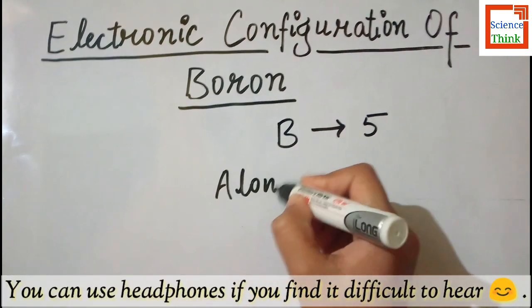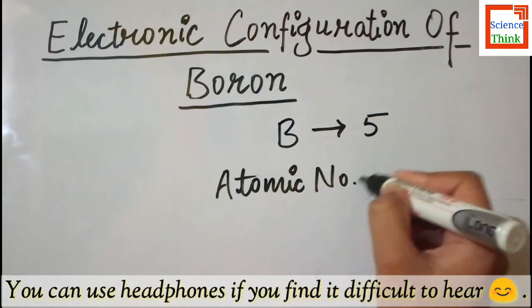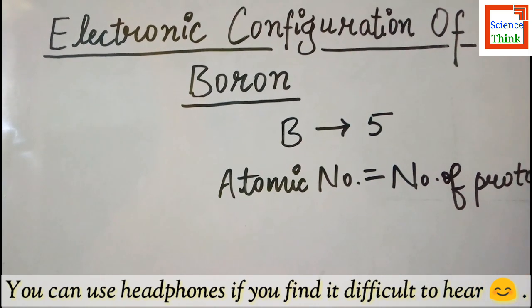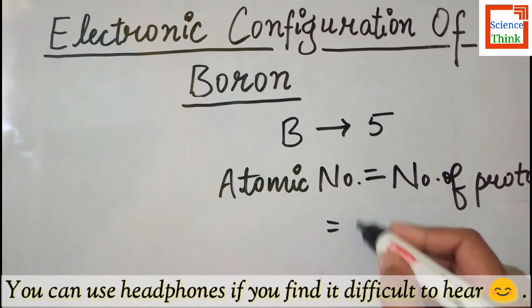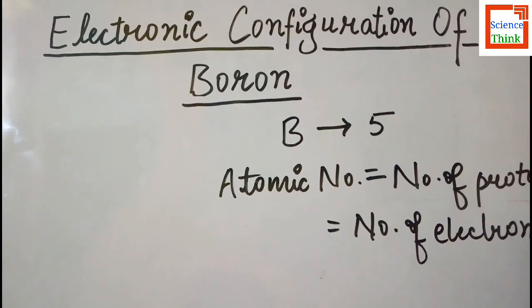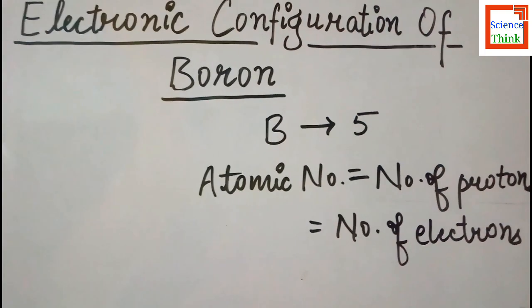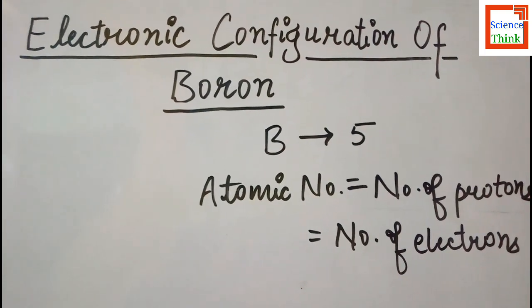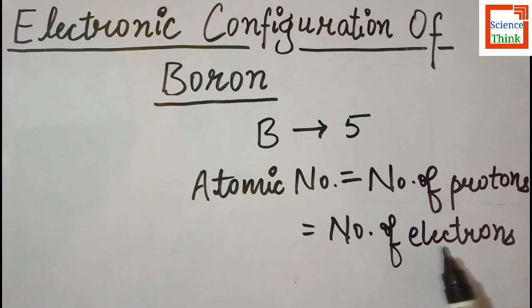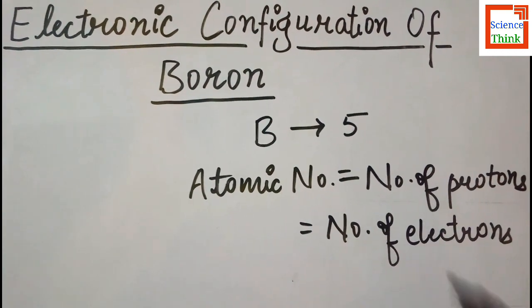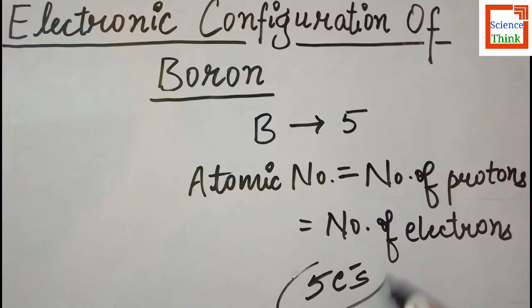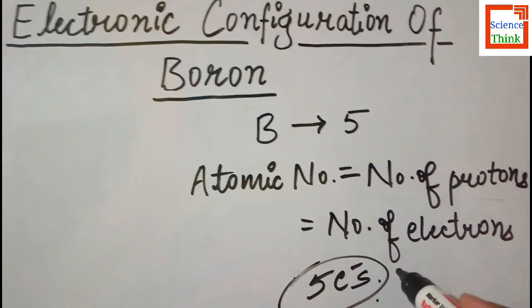And we know that atomic number is equal to the number of protons, is equal to the number of electrons. So now we know the atomic number of boron is 5, so the number of protons and the number of electrons are also 5. So boron has a total number of 5 electrons. But how do we write the electronic configuration of boron?